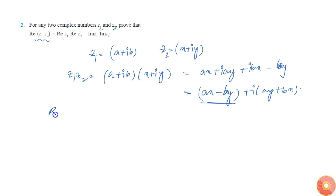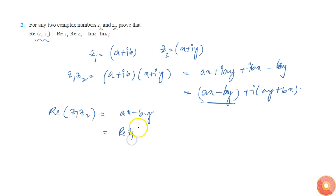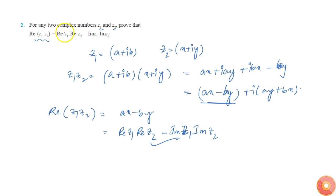So the real part of z1·z2 is equal to ax minus by, where a is the real part of z1 and x is the real part of z2, and b is the imaginary part of z1 and y is the imaginary part of z2. This is exactly what was asked to be proved in this question.